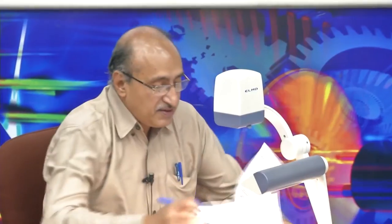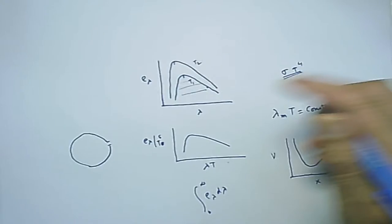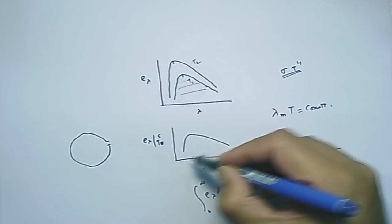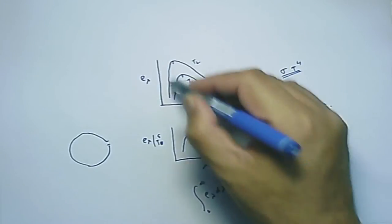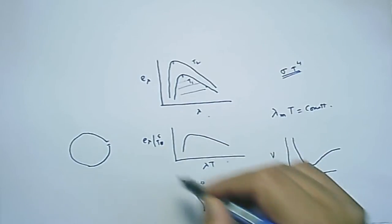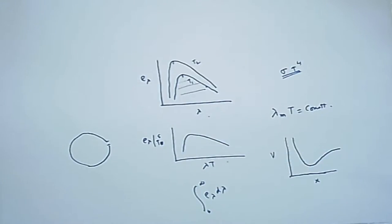From Don Bosco College, Guwahati: in the universal radiation curve, what is the physical significance of the wavelength-temperature product? As mentioned, this is an experimental curve. By expressing things this way — plotting e_λ/T^5 as a function of λT — we are able to unify all curves obtained at different temperatures into one single curve. This is purely an experimental way of looking at it, and it makes life simple because there is only one curve to deal with.